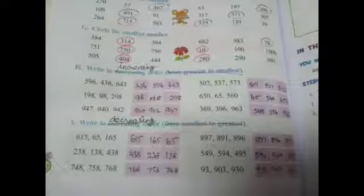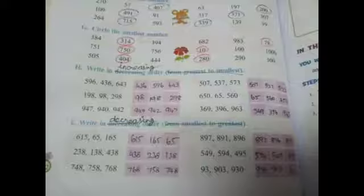Column I was also done as decreasing order by mistake. For 615, 65, and 165 — compare number of digits: 65 is the smallest so in decreasing order it comes last. Decreasing order is: 615, 165, 65. If all three numbers have the same number of digits, go with place values to compare.